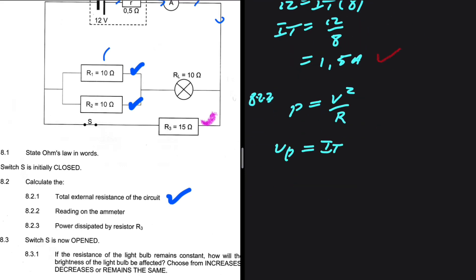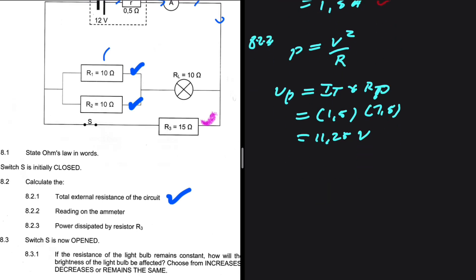V_P is I_T multiplied by R_T. I_T, that is 1.5. R_T, the total resistance in parallel, that is 7.5. We know fully well that should be R_P, right? V_P equals I_T multiplied by R_P. So 1.5 multiplied by 7.5, that is 11.25 volts. So we have V_P.